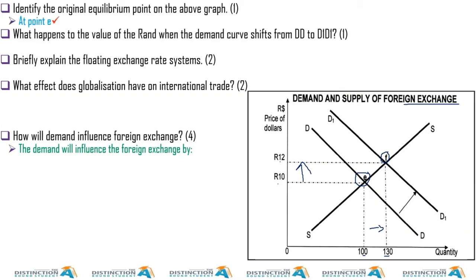When the demand curve shifts from DD to D1D1, the rand will depreciate — the value of the rand will decrease. Some of you might find it confusing: why do we say the rand is depreciating if it goes from 10 to 12? It's depreciating because you need more rands to buy the same dollar.